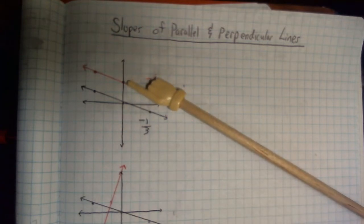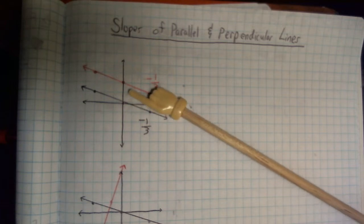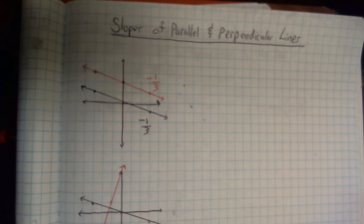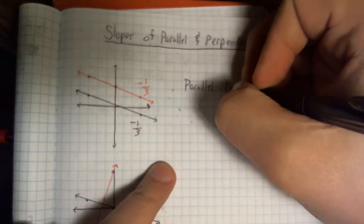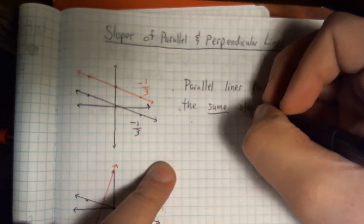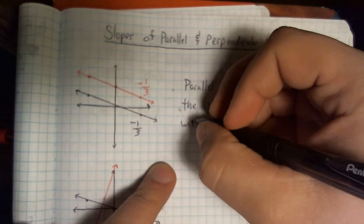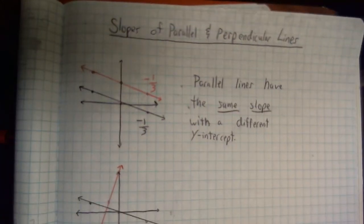They need to have the same slope, but they can't cross the y-axis at the same spot. They have to have different y-intercepts. If they cross at the same spot, they would be the exact same line, which would not make them parallel at all because they'd be intersecting infinitely. We want no intersections. Parallel lines have the same slope with a different y-intercept. Same slope, different y-intercept.